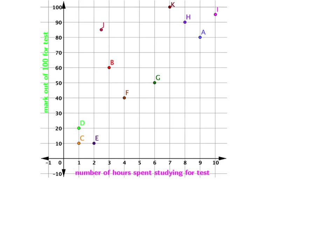Imagine I have a group of learners who've written a test. I plot on a graph the number of hours they spent studying for the test and the mark they got out of 100. I use the x-coordinate to show the number of hours spent studying and the y-coordinate to show the mark out of 100 for the test. Here's a plot of all my learners.